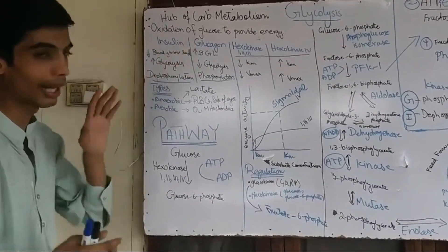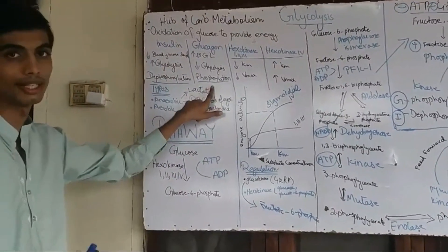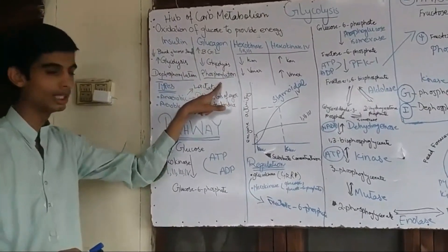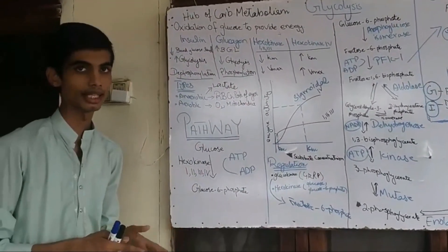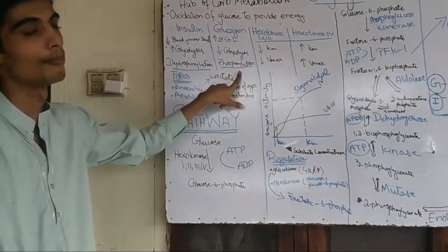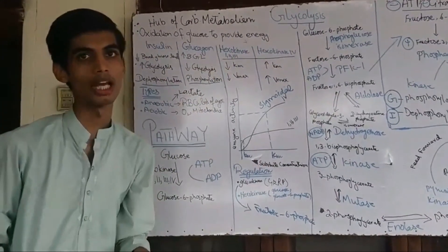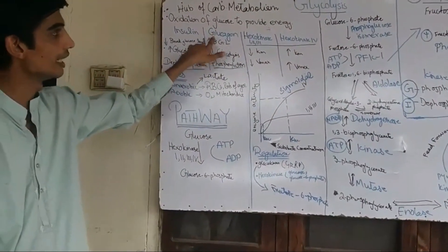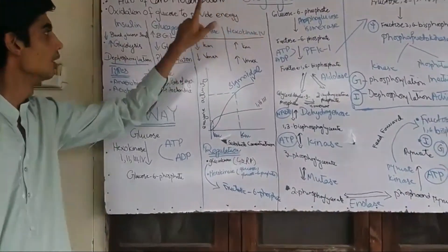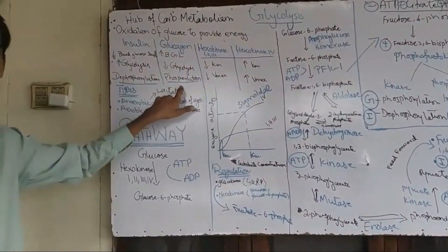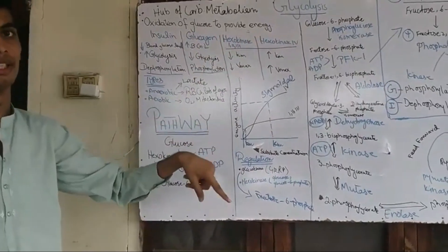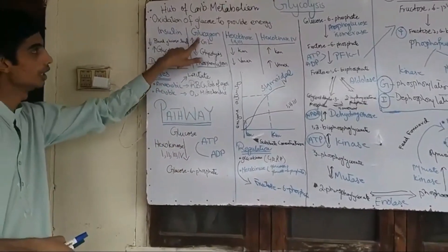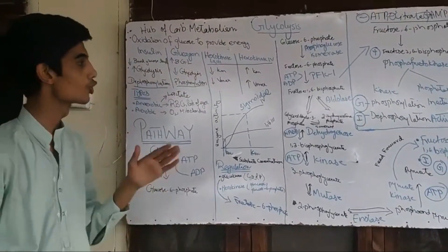The mechanism of action of glucagon involves phosphorylation via the cyclic AMP second messenger system. Glucagon produces cyclic AMP in the cell, which activates kinases, and kinases phosphorylate the regulatory enzymes of glycolysis. When these enzymes are phosphorylated, they become deactivated. So glucagon deactivates the process of glycolysis — all the regulatory steps slow down in response to glucagon.